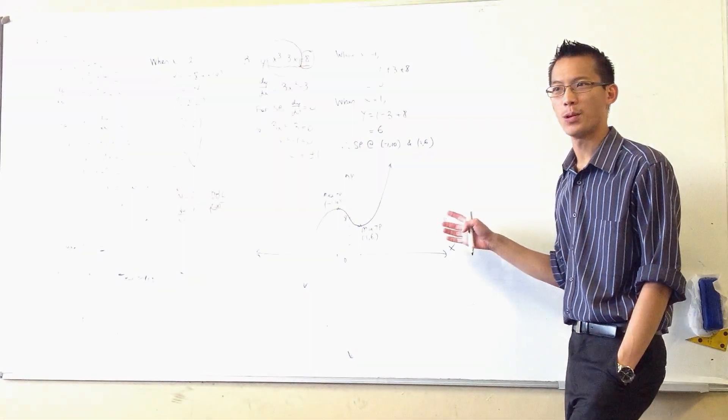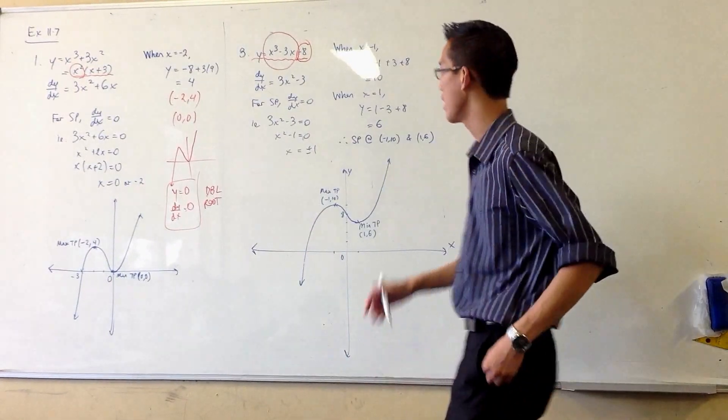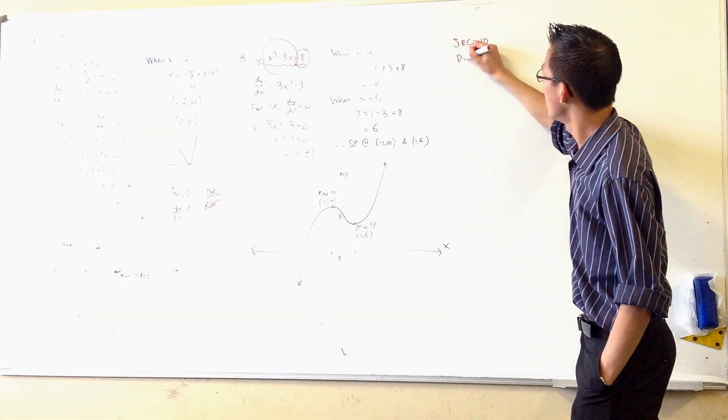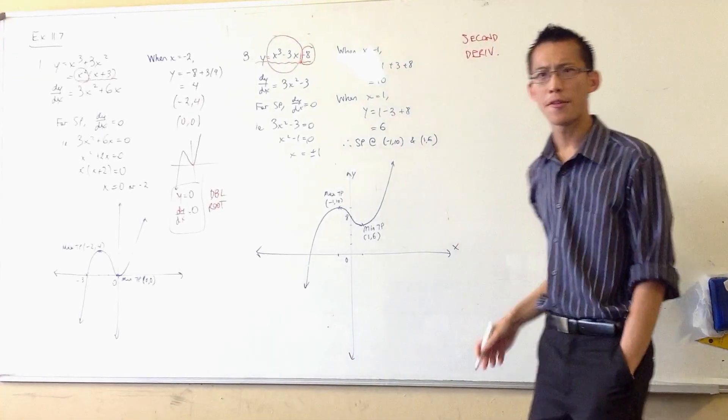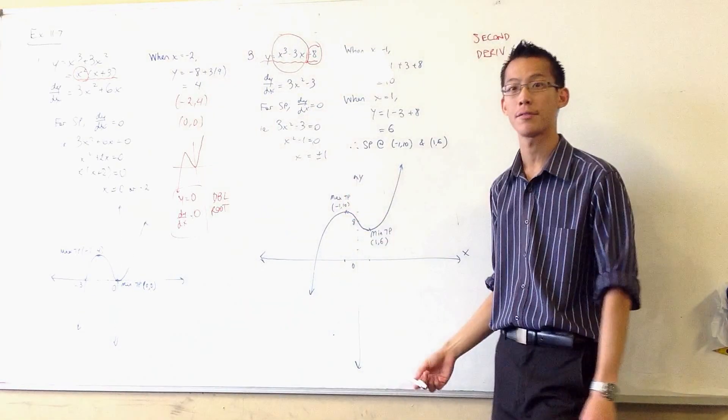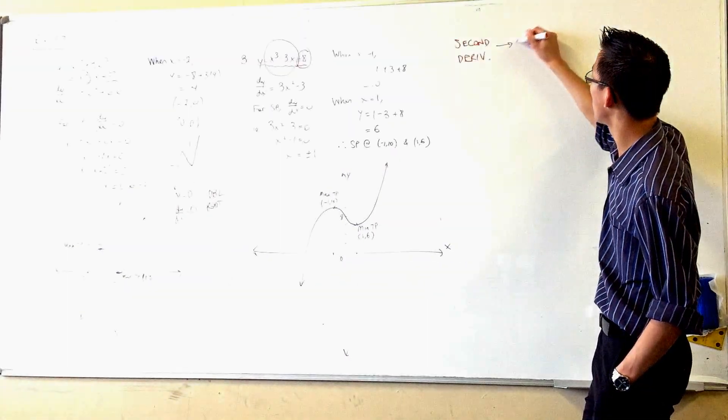Now, I want to use this example as a reason to bring in yesterday's topic. I told you what the second derivative was. The first derivative - what geometric quality does it tell you about the graph? It tells you gradient. We said the second derivative tells you concavity.